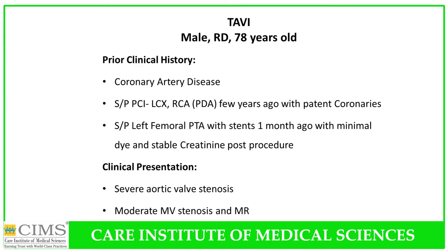Prior clinical history included coronary artery disease with PCI to the left circumflex and right coronary PDA a few years ago using first-generation drug-eluting sirolimus stents, both of which are patent. He also had left femoral peripheral transluminal angioplasty with stent placement one month ago using very minimal dye, with stable creatinine post-procedure. The current presentation was severe aortic valve stenosis with severe class 3 to 4 angina despite patent coronary arteries, and also moderate mitral valve stenosis with moderate mitral regurgitation.